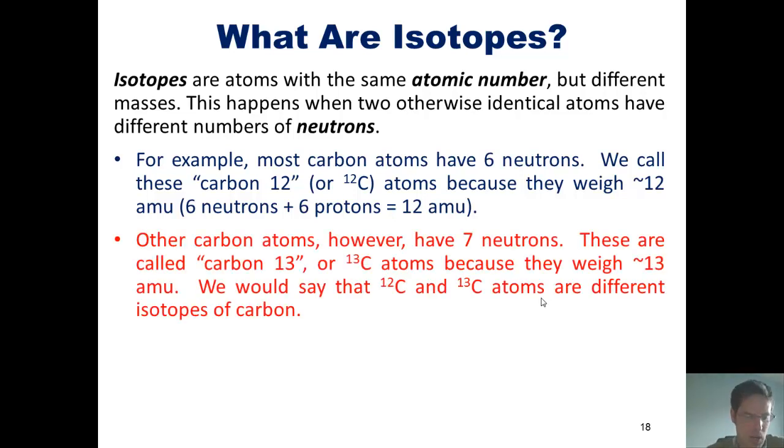Other carbon atoms, however, have 7 neutrons. These are called carbon-13 or C-13 atoms, because they weigh 13 amu. We would say that carbon-12 and carbon-13 atoms are different isotopes of carbon.